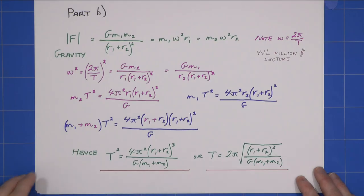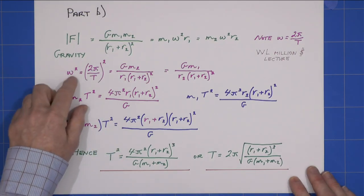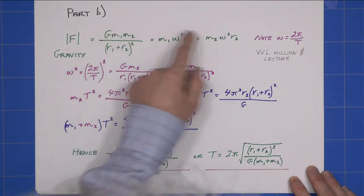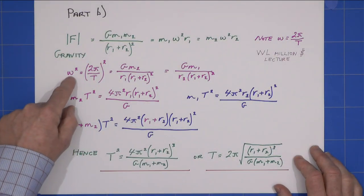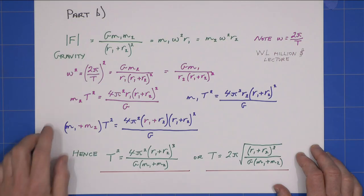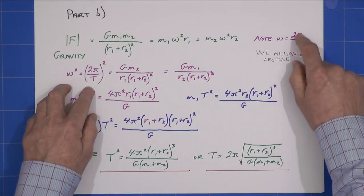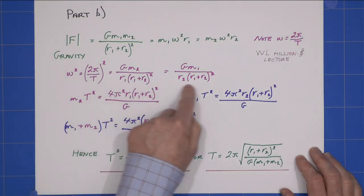So I can now rearrange each of these equations for ω², and noting that ω² = (2π/T)², I get this here.